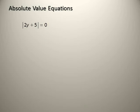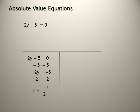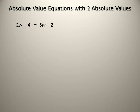Solve |2y + 5| = 0. There is only one case here: 2y + 5 = 0, since there is no such thing as negative zero. So 2y = −5, meaning y = −5/2. The solution set equals {−5/2}.